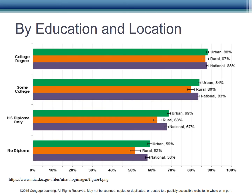Finally, let's look at education and location together. Those with a college degree have the highest access at 88%. That's not very different from college graduates living in rural areas, with 87% having access. As you move down an education level, the gap widens a bit, with those with no diploma having urban access rates of 59% and rural access rates of 52%.